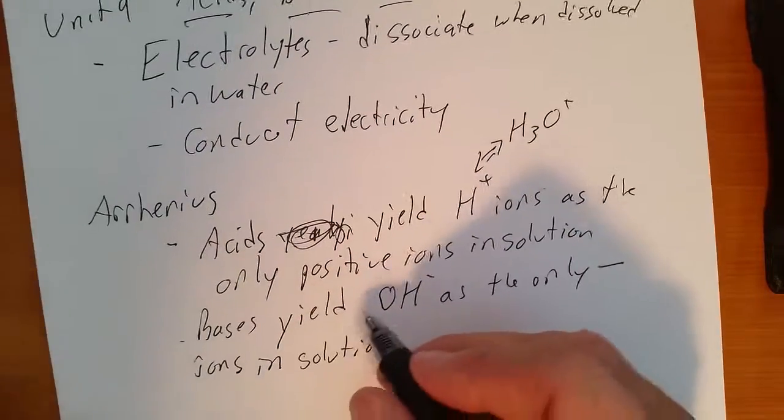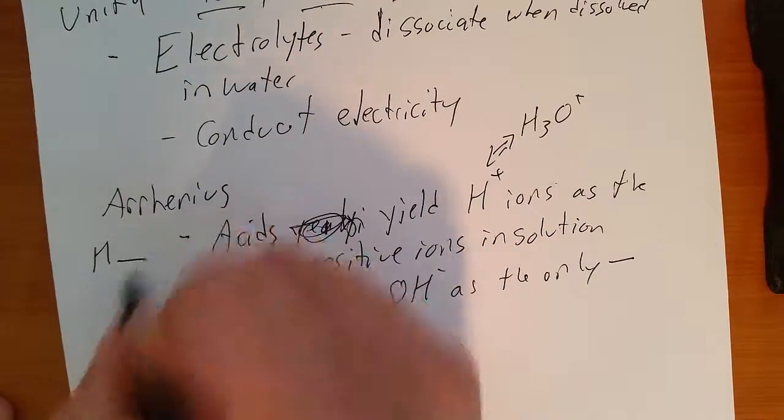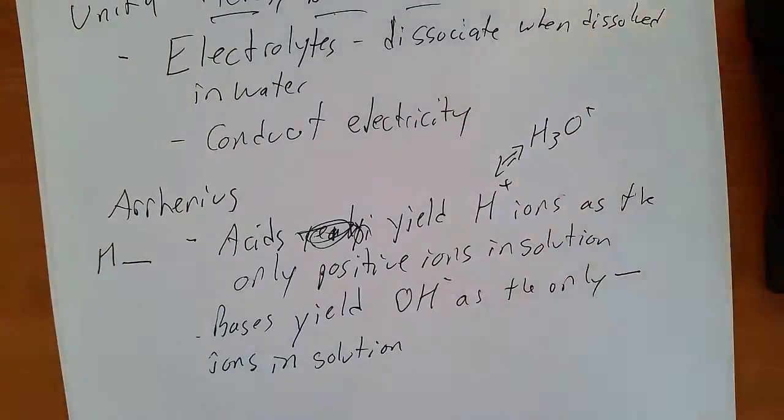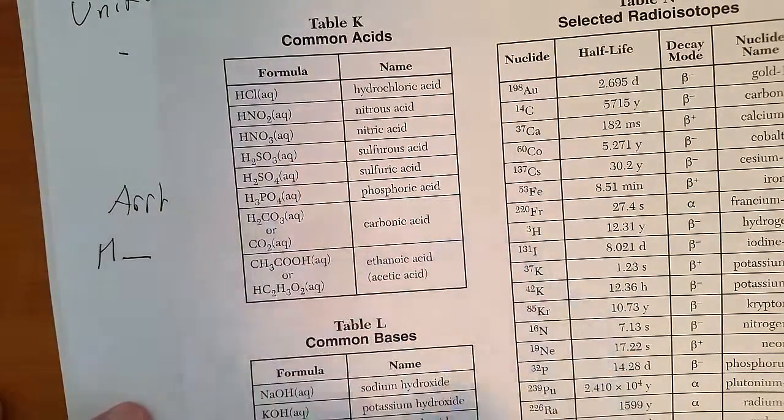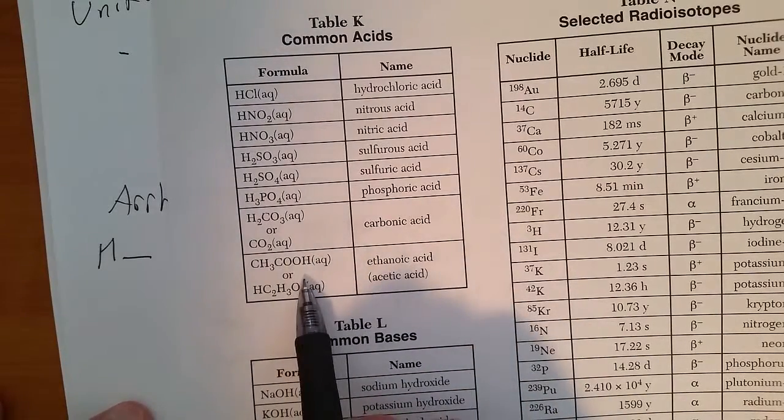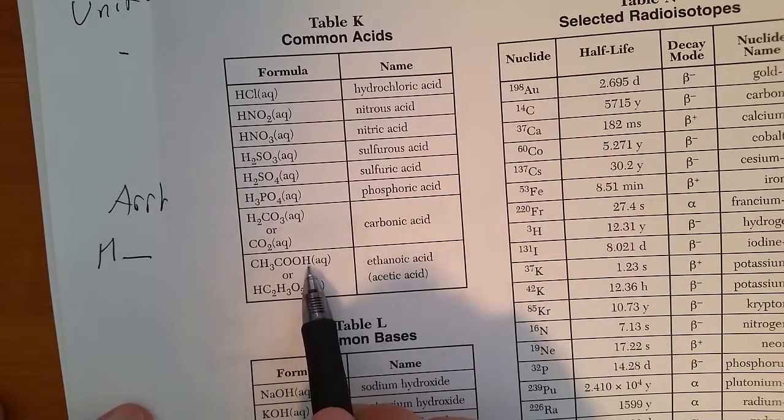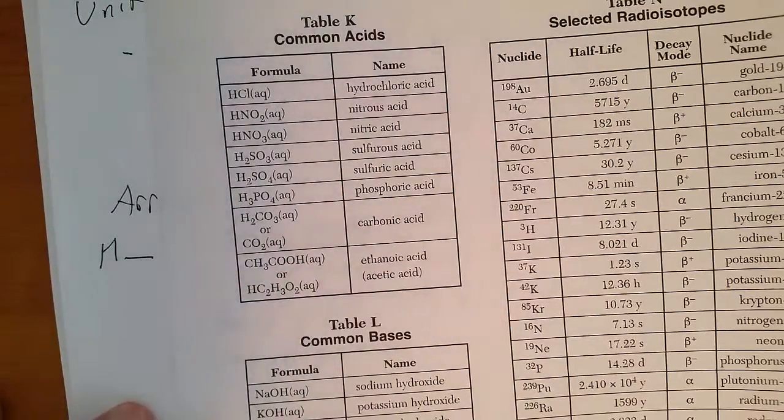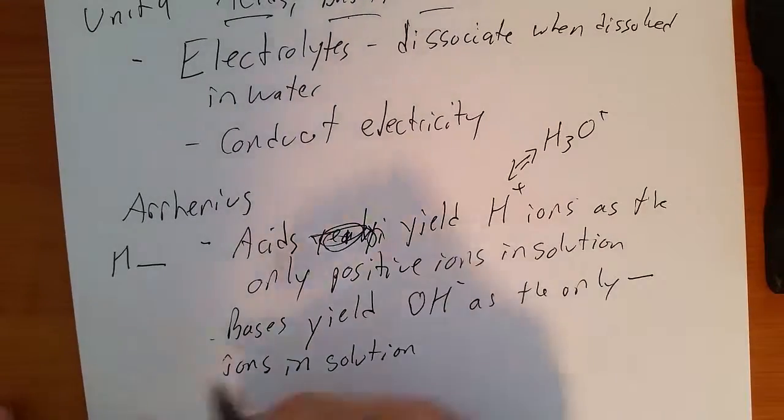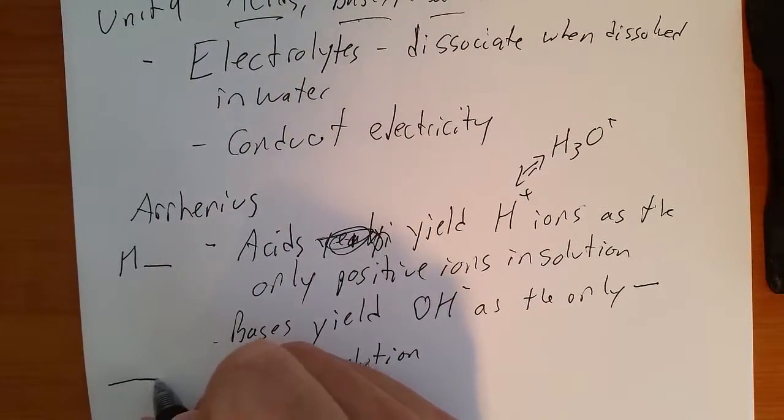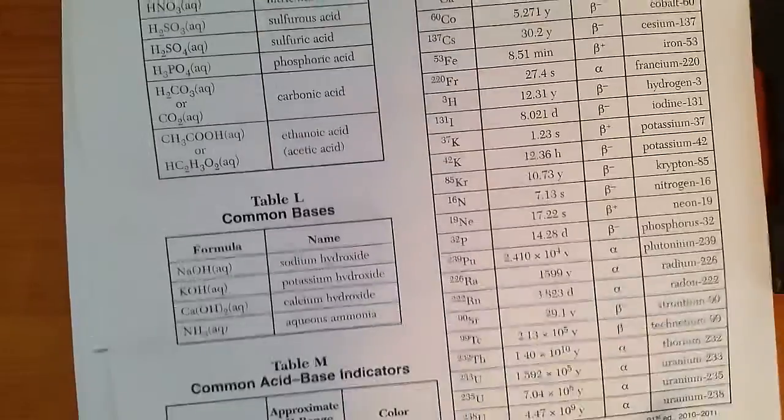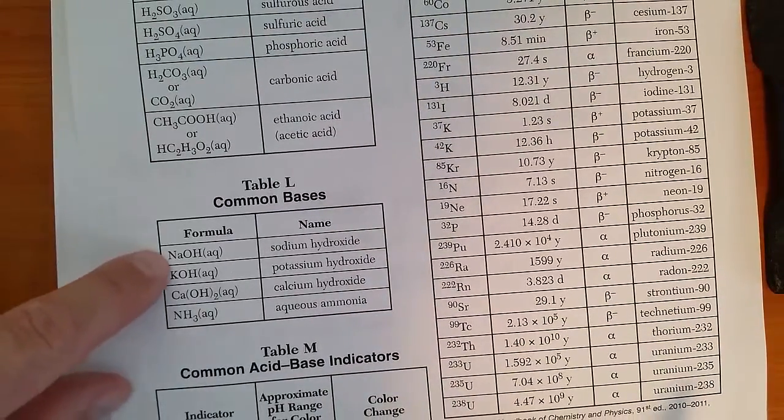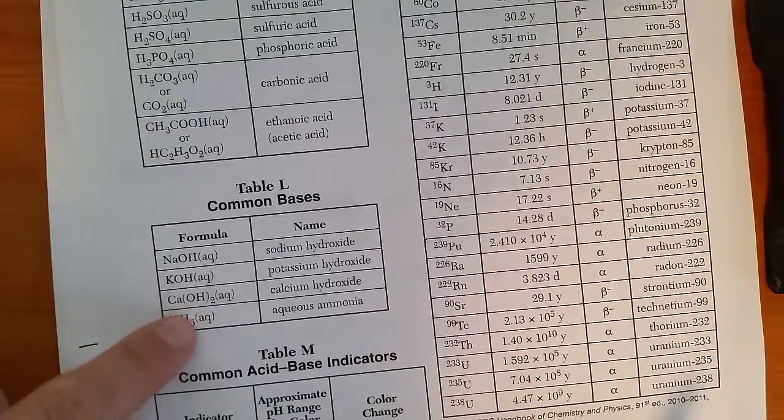Generally acids are going to be H something, kind of like they are here on table K. Everything starts with an H. Organic acids are usually written with the H at the end. Bases are going to be some sort of metal OH, as shown here on table L. Sodium hydroxide, potassium hydroxide, calcium hydroxide.